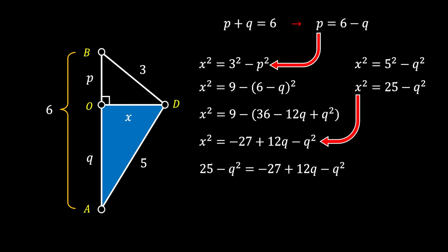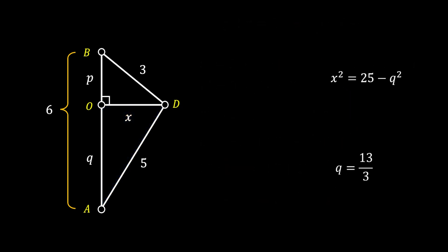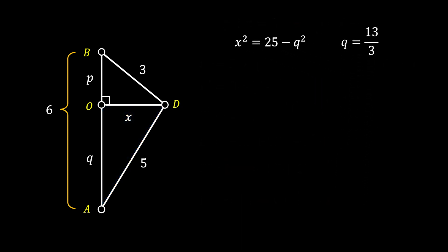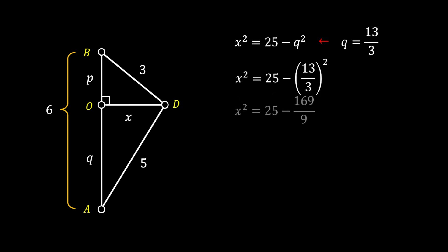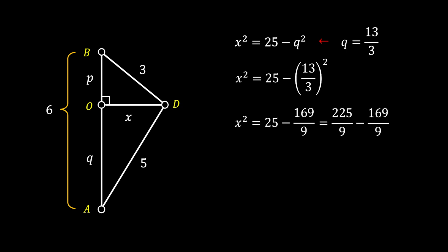We simplify by canceling −q² on both sides of the equation. After working through this, we get that 12q is equal to 52, which means q is equal to 52/12, and we can simplify this to 13/3. Now we substitute the value of q back into our Pythagorean theorem to get the value of x. After simplifying and finding the common denominator, we get that x² is equal to 56/9, which means x must be equal to √56/3, and this value nicely approximates to 2.5.